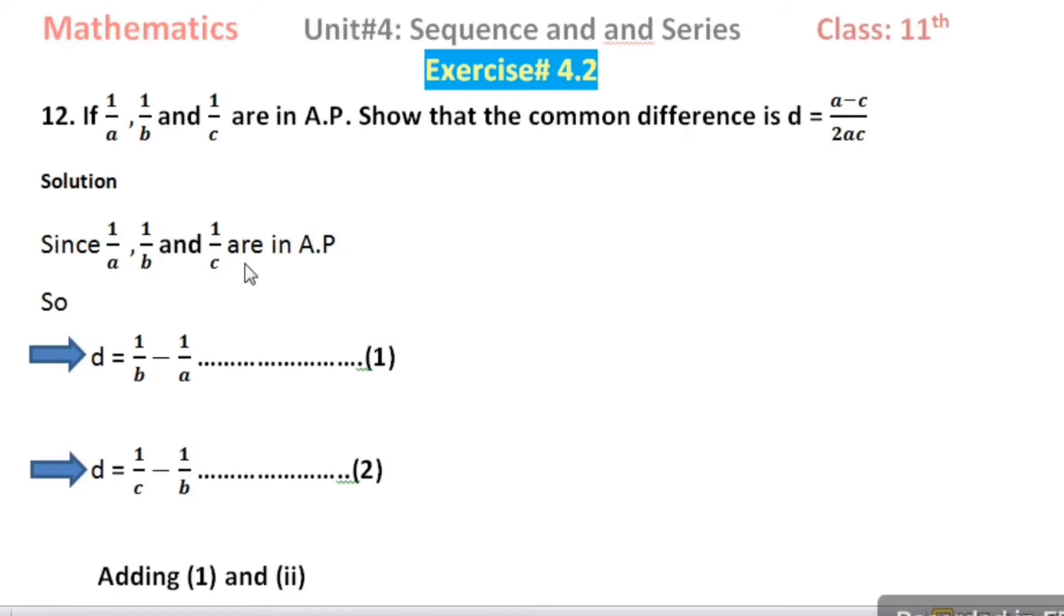Solution: Since 1 divided by a, 1 divided by b, and 1 divided by c are in arithmetic progression, d is the common difference between 1 divided by a and 1 divided by b.